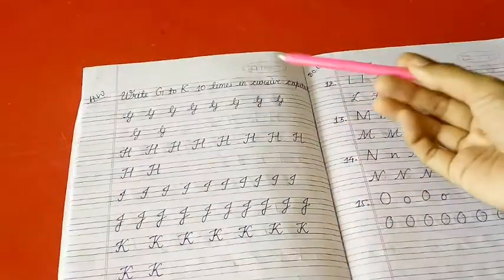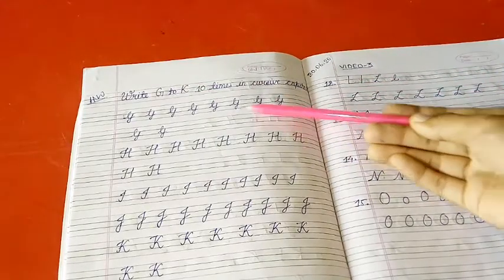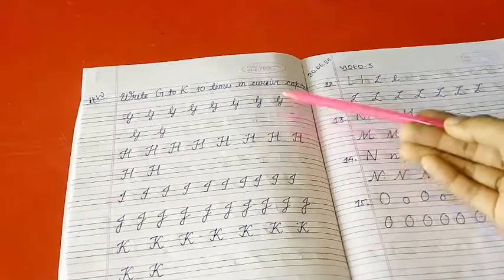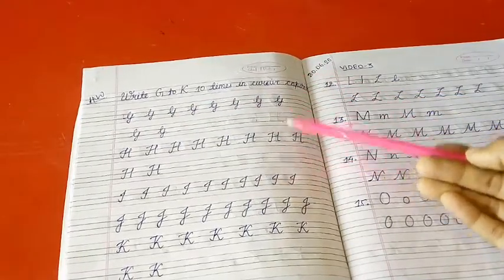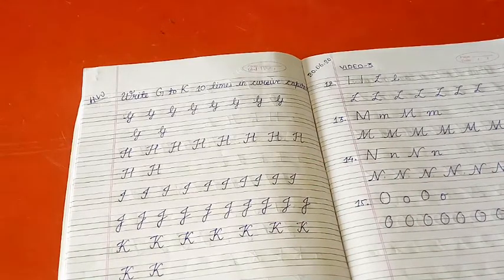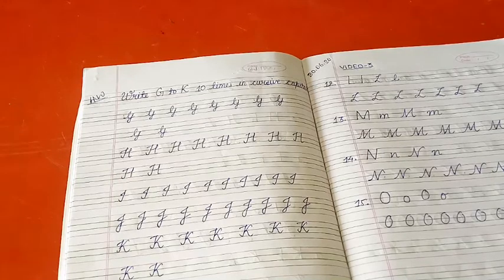Coming to the homework of this, you got the homework to write G to K ten times in cursive capital. See? Is mein mujhe do line ka zarurat pada. I was not able to complete G in one single line, so I use these two lines. H, I, J, K, okay?